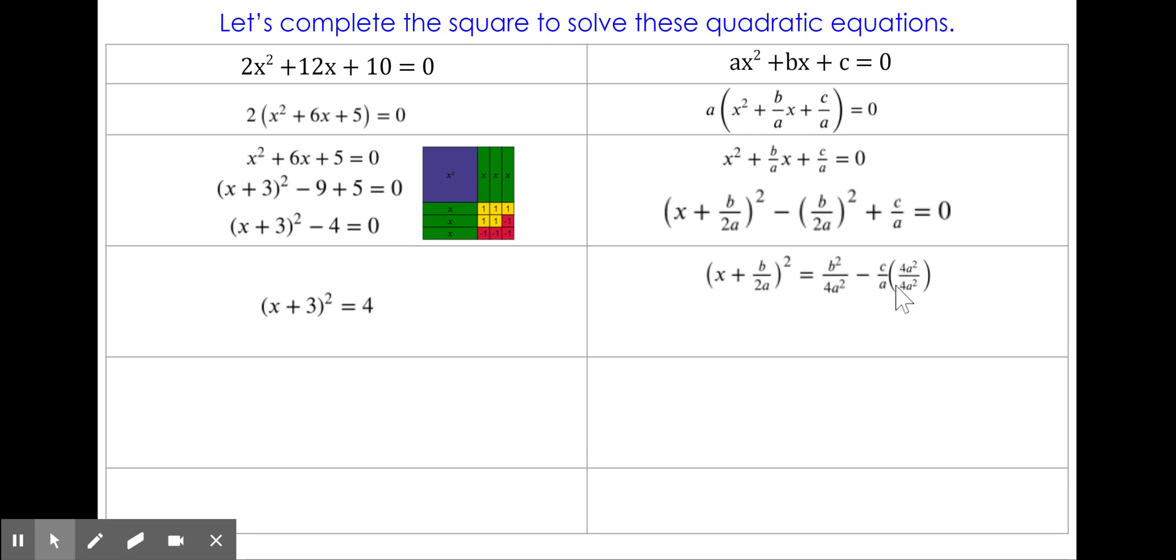I then am going to subtract c over a. I want to write this side of my equation as a fraction. So I know that to add or subtract fractions, I need to have the same denominator. So I can multiply c over a by 4a squared divided by 4a squared, because that equals 1, and I haven't changed my equation. This a will cancel out 1 of the a squareds. So we are left with b squared minus 4 times a times c, because I just rearranged the 4, the a, and the c, which I can do with multiplication.